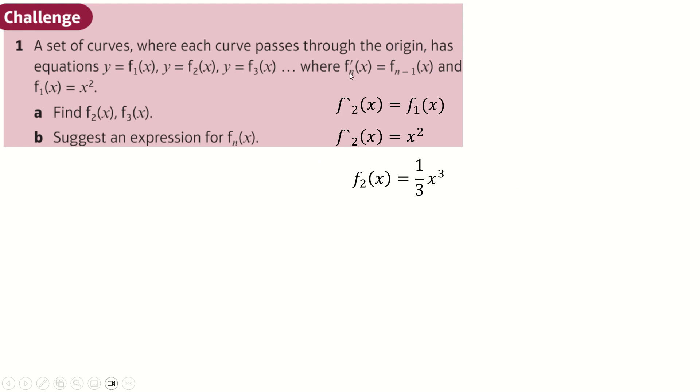We can do that again. So therefore, f dash 3 of x is f2 of x, which is this. And we'll just integrate that to make a 6th. No, sorry, a 12th of x to the 4th. Again, the plus c is 0. I think that's that. It's just an expression for this. So let's look at these two really hard and try and figure out an expression here.